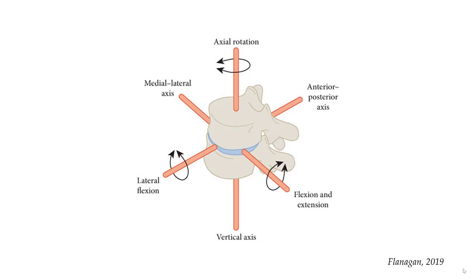The functional spinal unit will allow motion in all three planes. The axes all coincide with the superior aspect of the inferior vertebral body. Flexion and extension in the sagittal plane is about a medial-lateral axis. Lateral flexion in the frontal plane is about an anterior-posterior axis. And rotation in the transverse plane is about a longitudinal axis.